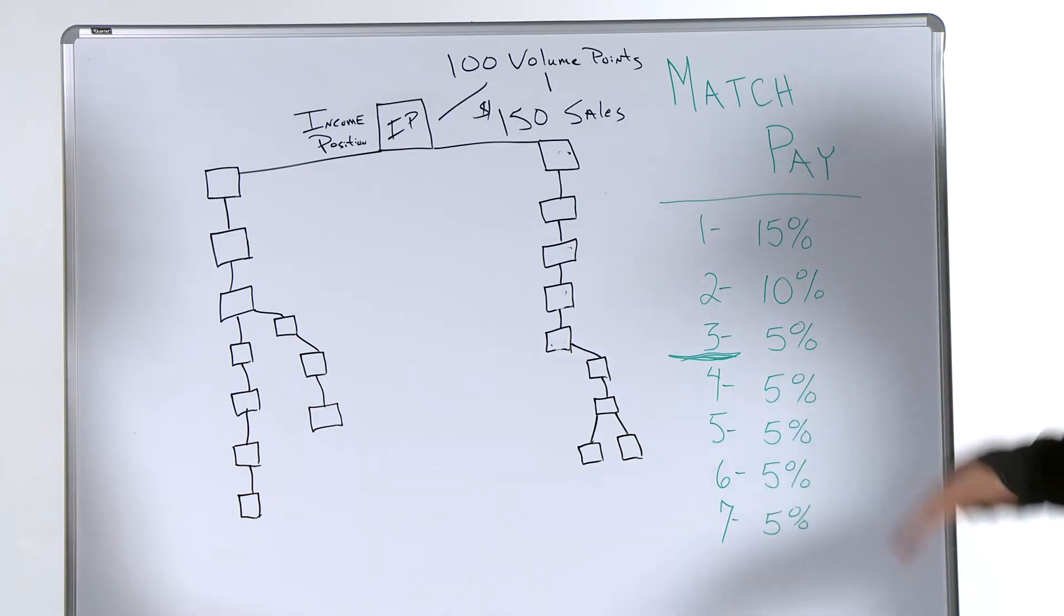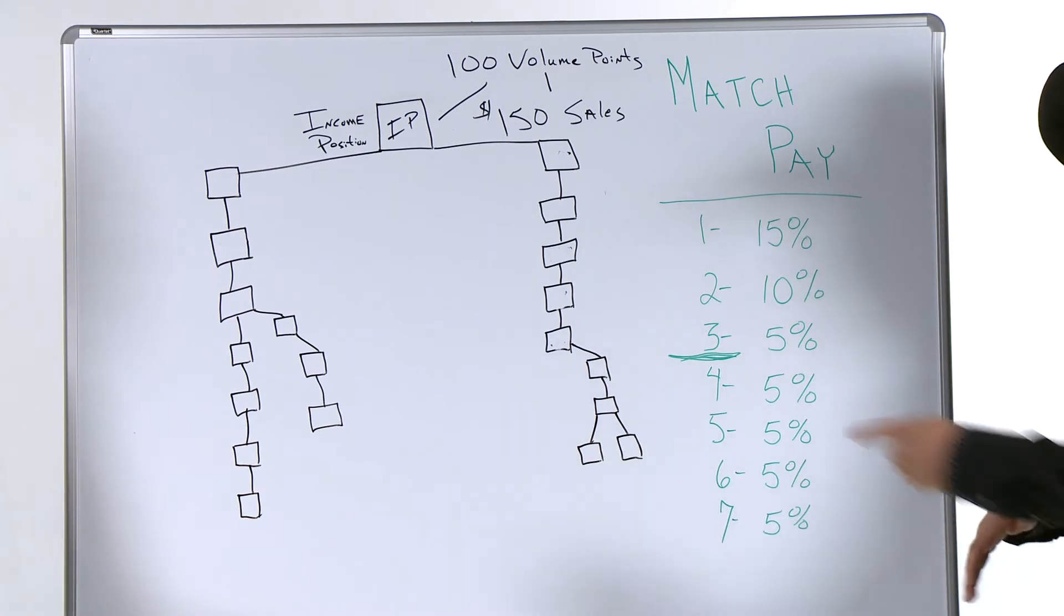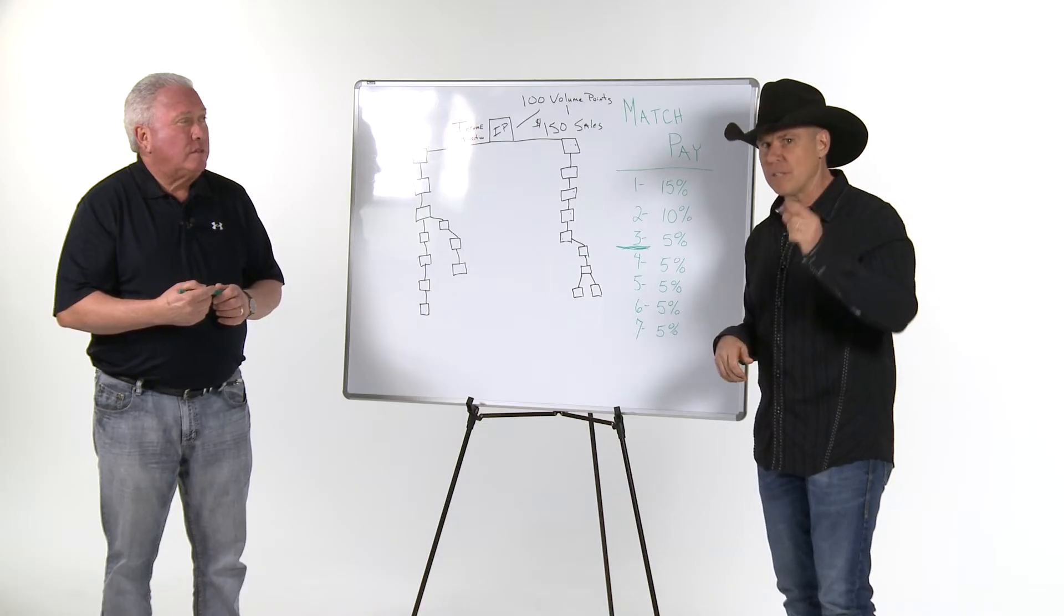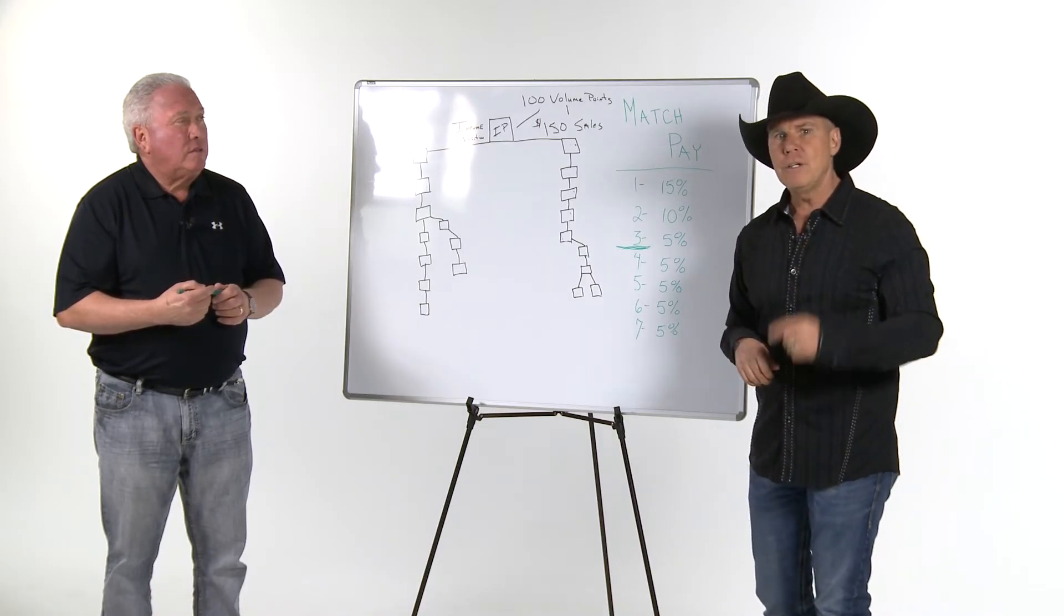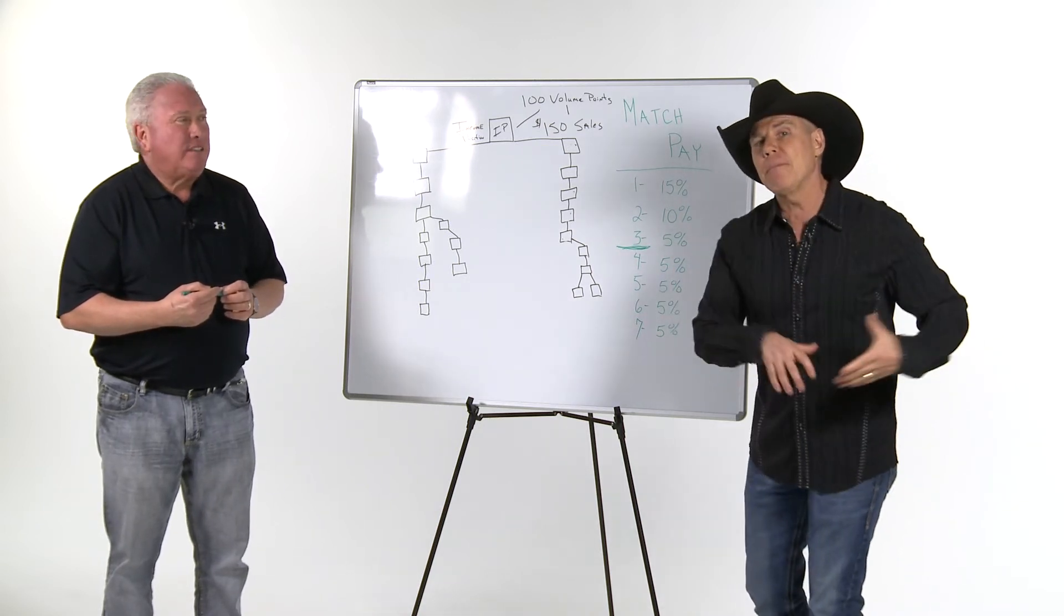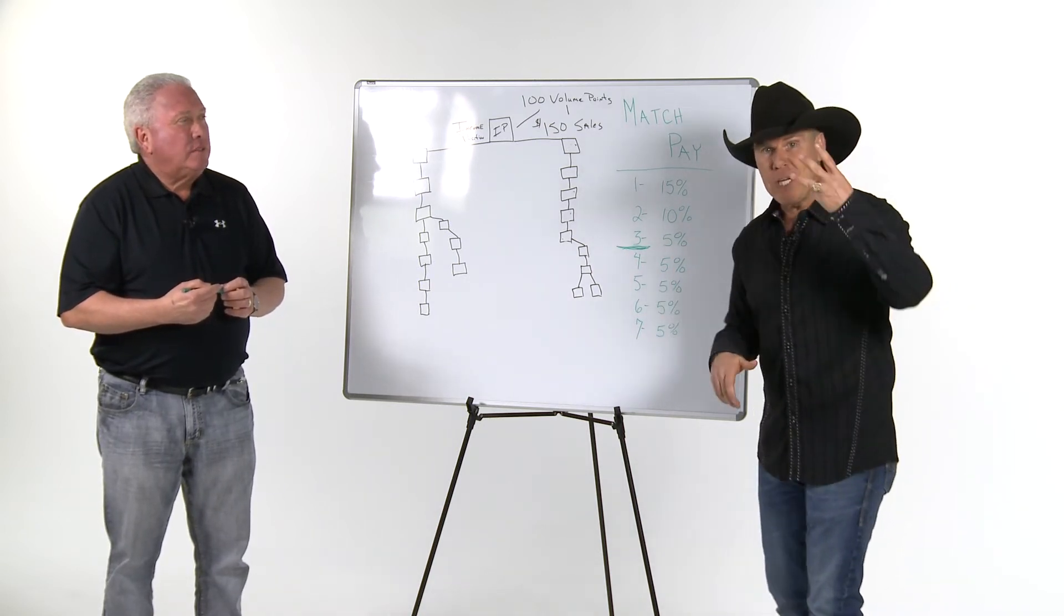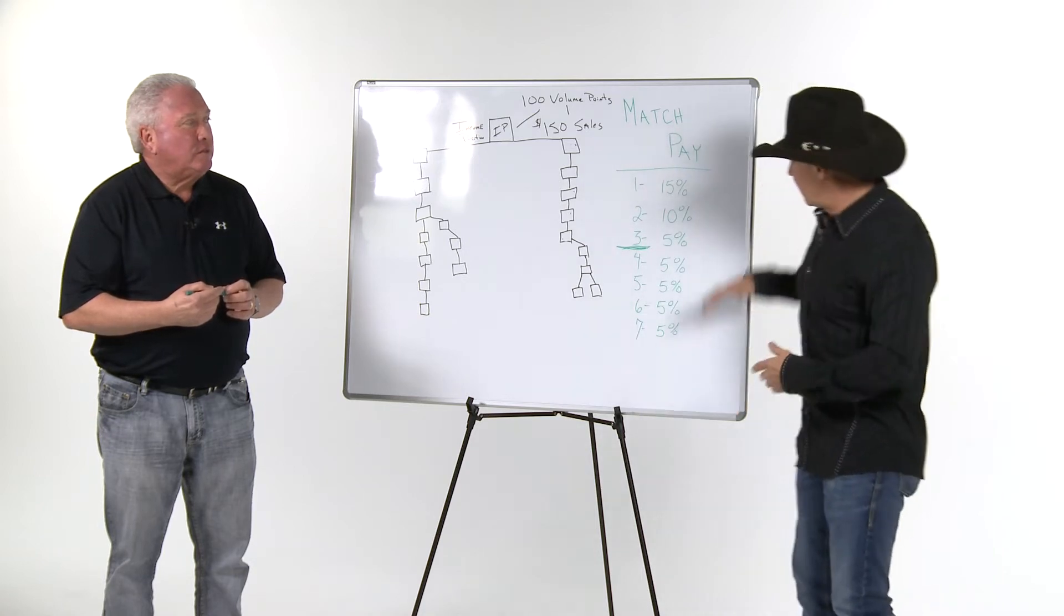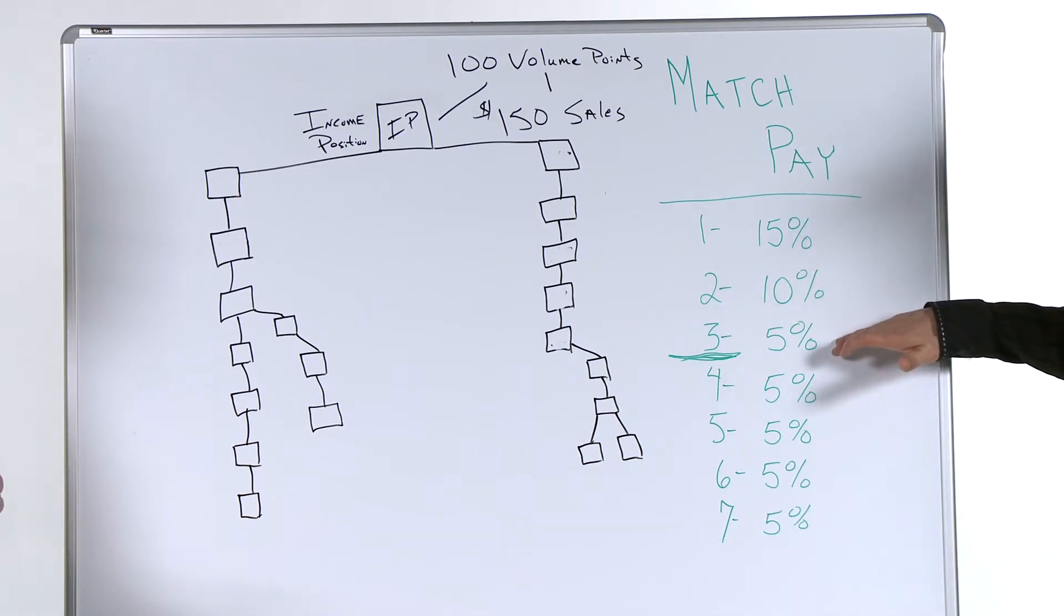Now imagine this for a moment. What if that's you? You found somebody like Chris who found somebody like me, and then I went and found a hundred people. Well that would be your third generation. So Chris, at your third generation, let's just say those hundred people all just got started—that would be 200 people on your third generation.